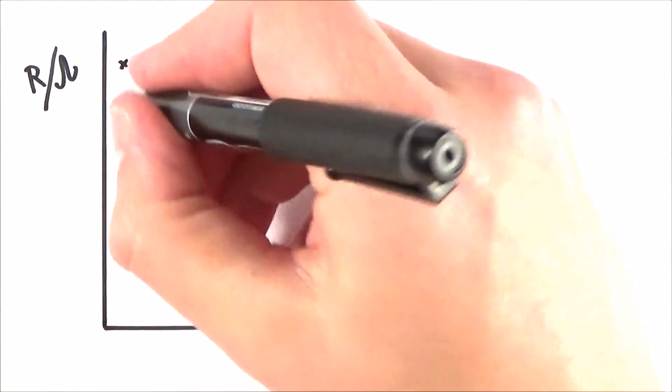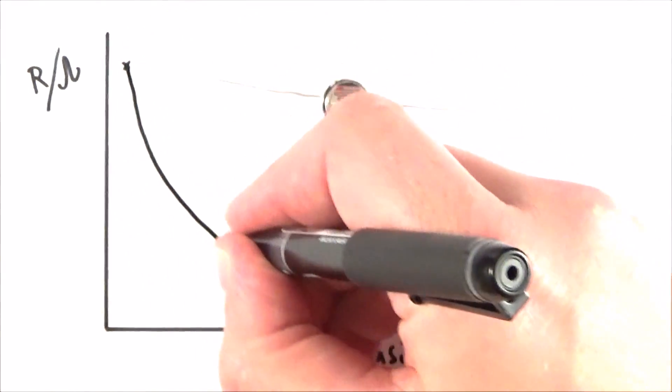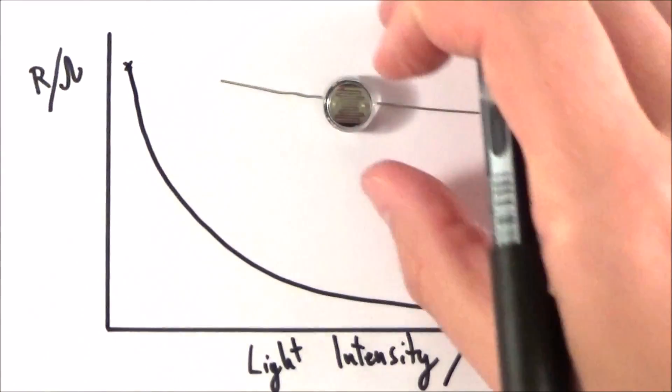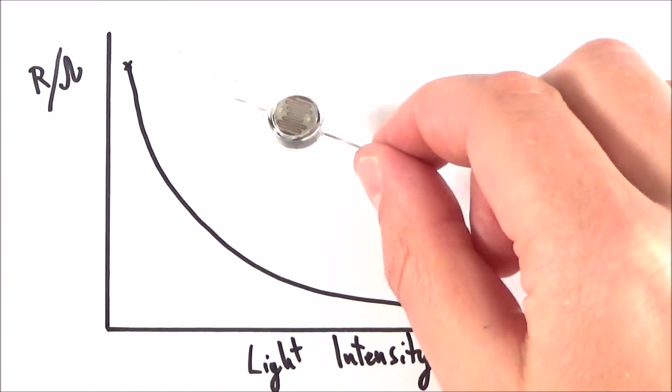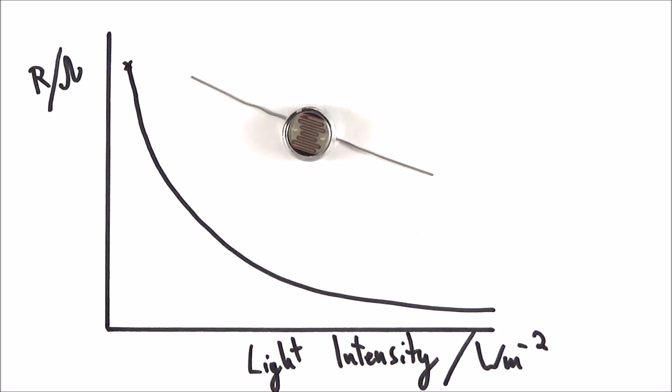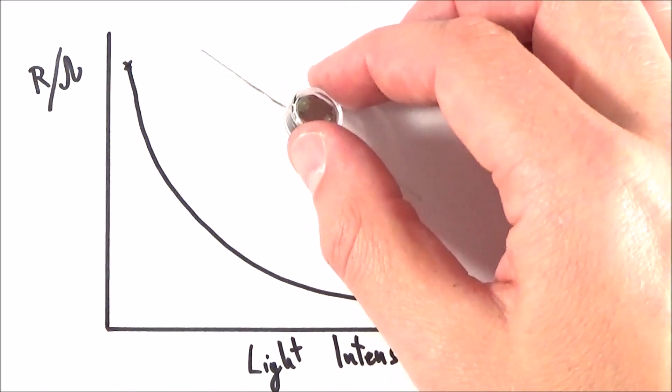What we find is we get a graph that looks something a bit like that. The LDR is an extremely useful device because it means we can alter the resistance and how that circuit behaves under various light conditions.